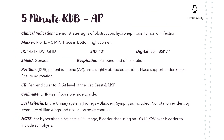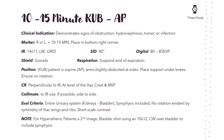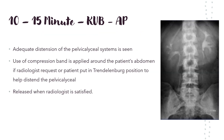Next is the 5-minute KUB, after which you start to see contrast coming into the kidneys, renal calyces, and descending toward the ureters. For the 10 to 15-minute KUB, adequate distension of the pelvicalyceal system should be seen. A compression band may be applied around the patient's abdomen if the radiologist requests, or place the patient in Trendelenburg position to aid distension. Release compression when the radiologist is satisfied, and you should see contrast beginning to flow down into the ureters.